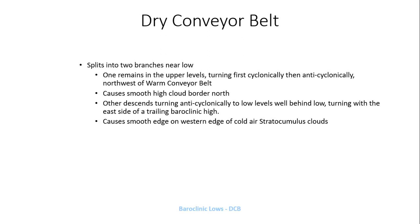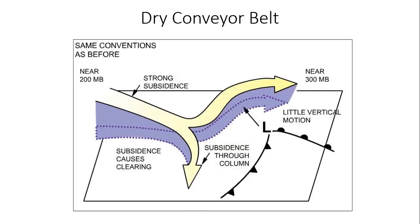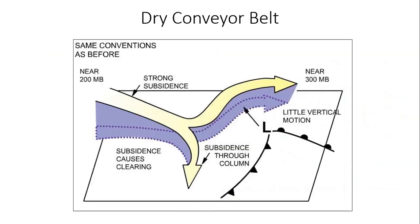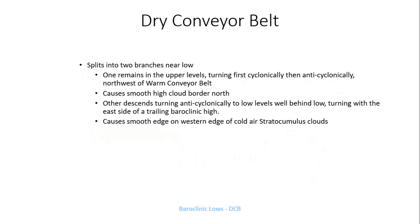The dry conveyor belt splits into two branches near the low-pressure center. One remains in the upper levels, turning first cyclonically then anticyclonically northwest of the warm conveyor belt, causing a smooth high cloud border to the north. The other will descend, turning anticyclonically to low levels well behind the low, turning with the east side of the trailing anticyclonic high-pressure system moving in behind the cold fronts. This causes a smooth edge on the western edge of the cold air stratocumulus clouds. Bottom line: if the dry conveyor belt splits to the right, you get clearing skies through the entire air column as the air sinks.